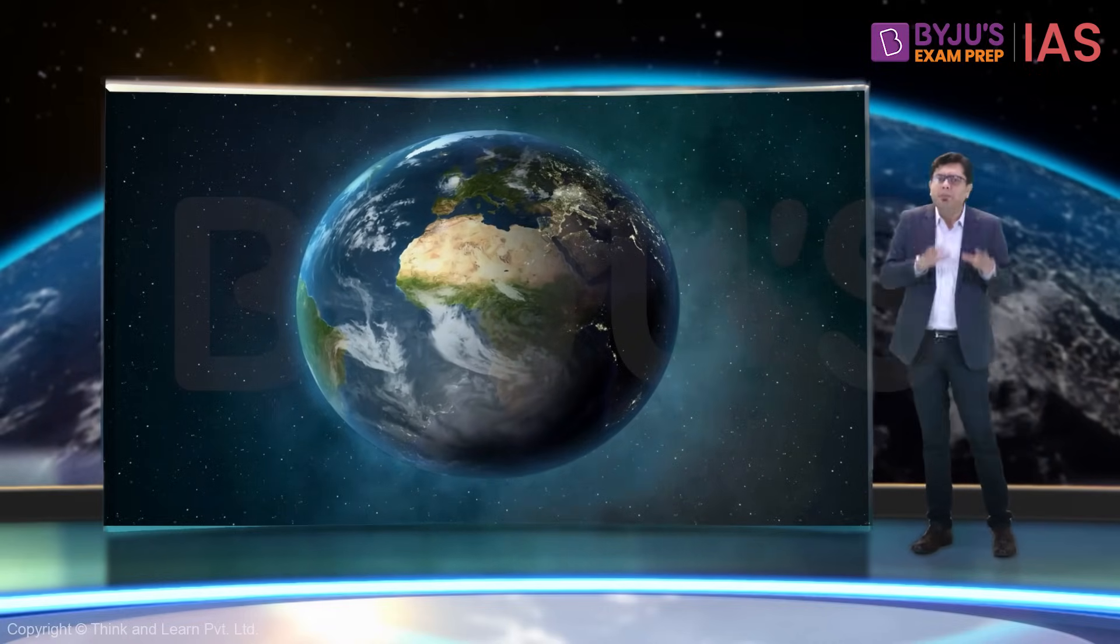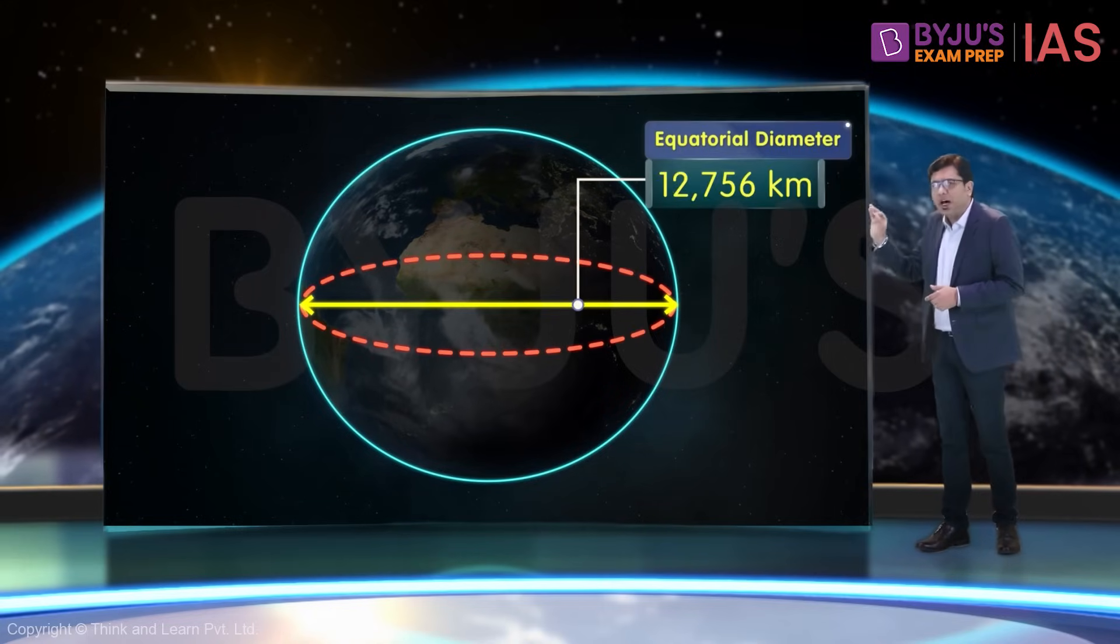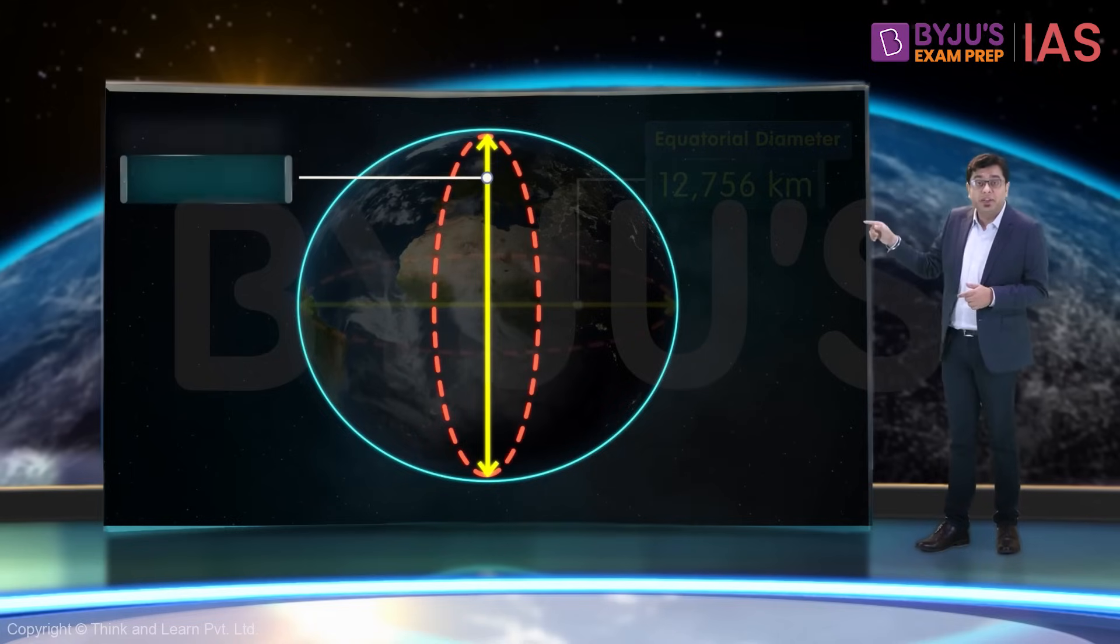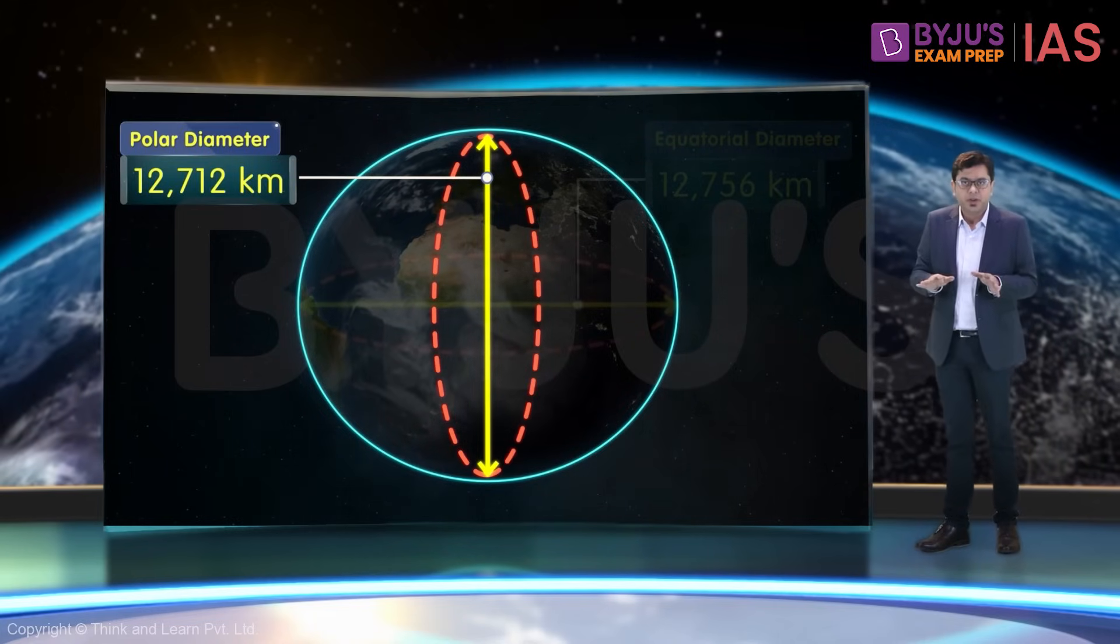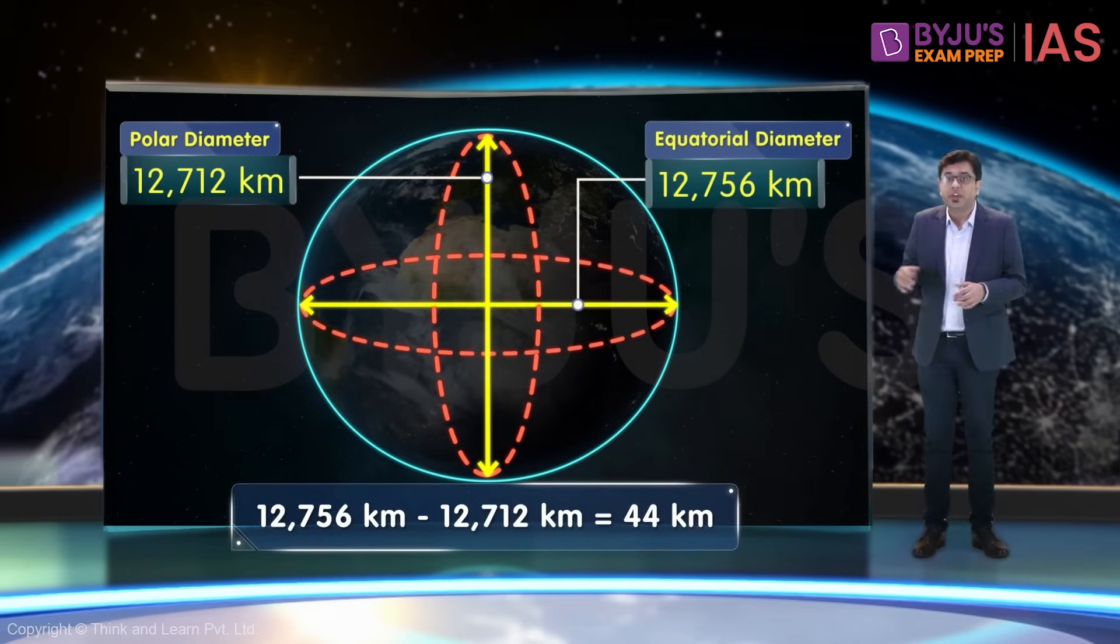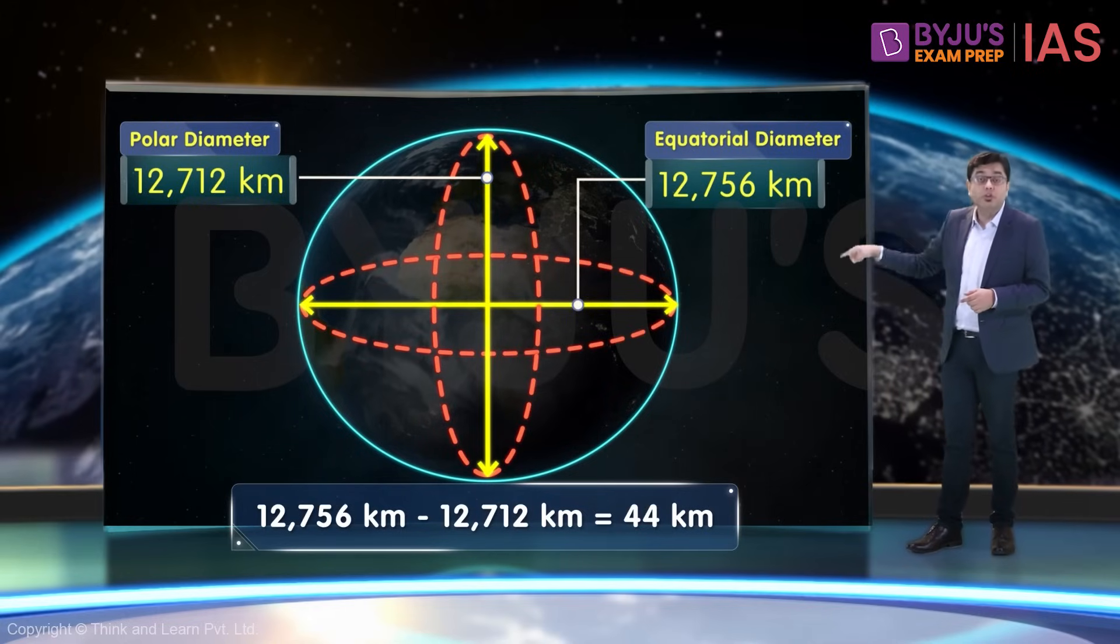Just to give you some numbers, Earth's equatorial diameter is around 12,756 kilometers, while its polar diameter is 12,712 kilometers. Thus, there is a difference of approximately 44 kilometers between the diameter drawn to the equator and to the poles.